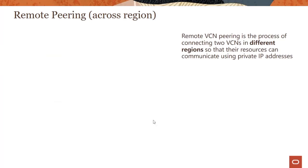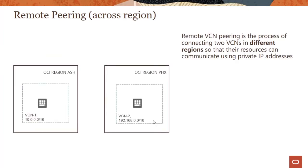What is remote peering? It's the same concept, but now you're connecting VCNs in different regions. The most obvious use case is disaster recovery — you want to do DR, take backups, or connect VCNs across regions. You can see two different regions, Ashburn and Phoenix in the US, with VCN1 and VCN2 having the same address spaces as before, but now in different regions.